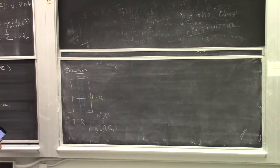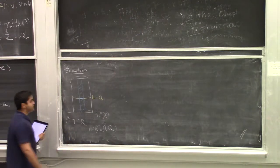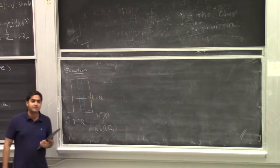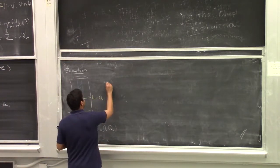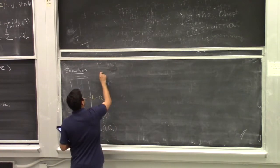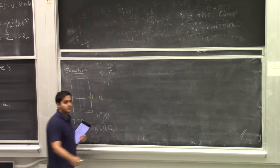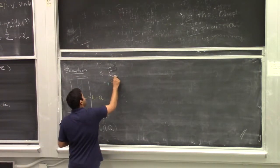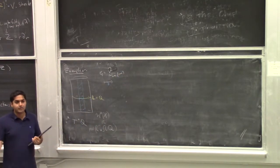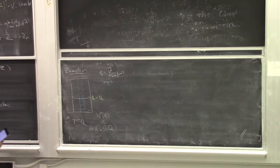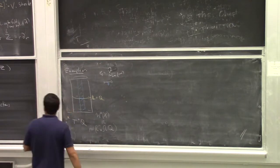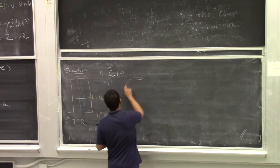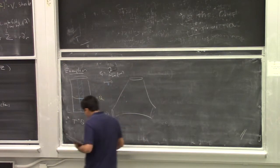What's the cosheaf in this case? I'm supposed to associate to every open set on L a category. I'll tell you what it is on small open sets. To an open set around a smooth point, I'll associate a sort of trivial category with one object and an identity — local systems up to derived equivalence. There's only one interesting local system on the interval, so at smooth points there's really nothing interesting. Where this category becomes very interesting is at singular points.